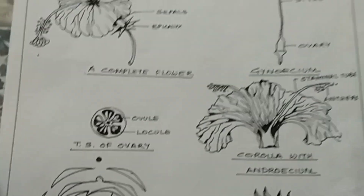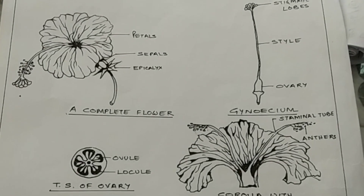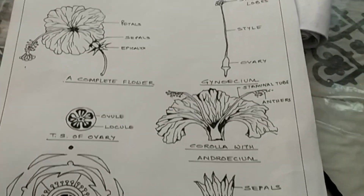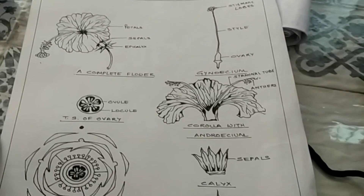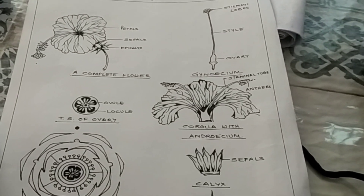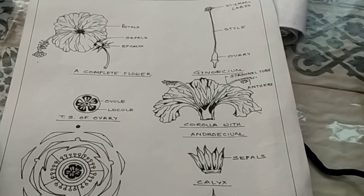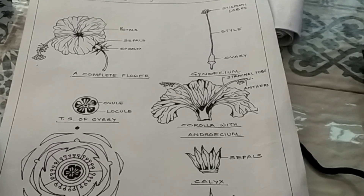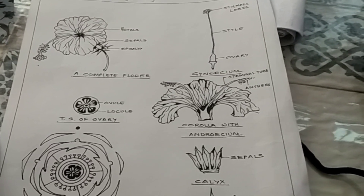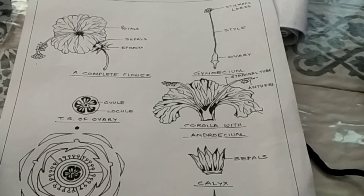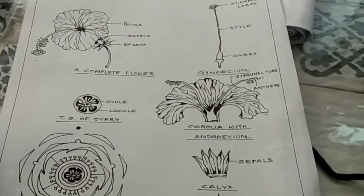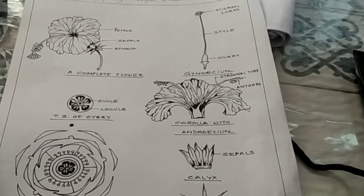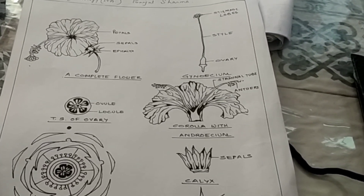This is the complete description of the Hibiscus rosa sinensis different floral parts. Care should be taken while drawing — drawings should be neat and clean. If you do it like this, there will be no chance of losing marks. Students are often worried about their diagrams in biology, but one very important thing: take it simply. When you think of it as a tough task there will be a problem, but when you do it simply you can easily get good results. Thank you.